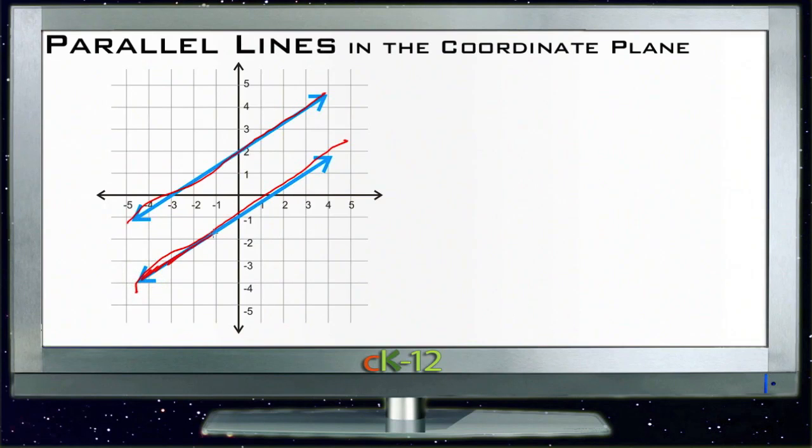Then anytime one of them goes up and over to get from point to point, the other one must go exactly up and over the same amount in order for those two lines never to actually touch each other. If one of these went up faster than the other one, then sooner or later they'd run into each other. And since they don't because they're parallel, that must mean that the rise and the run are exactly the same.